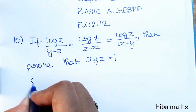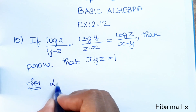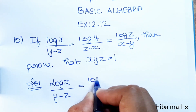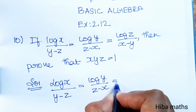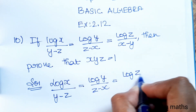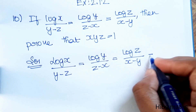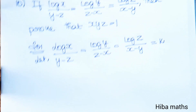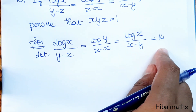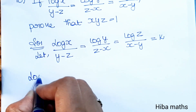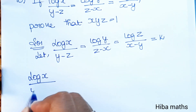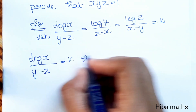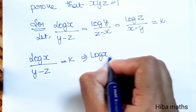In the solution, we let log x/(y-z) = log y/(z-x) = log z/(x-y) equal to k. From this, log x divided by (y-z) is equal to k.